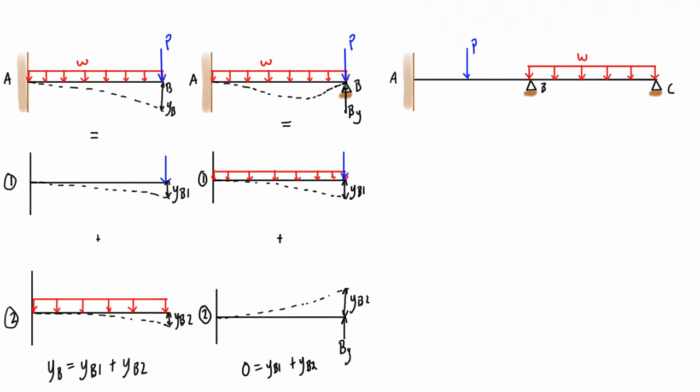When we remove a reaction from the first situation and then add it back in a second situation using superposition, we call that removing a redundant reaction. It's redundant because it's the reaction that puts the system beyond what can be solved with statics equations alone. If only one reaction makes it that way, the problem has one redundant reaction and is one degree statically indeterminate.